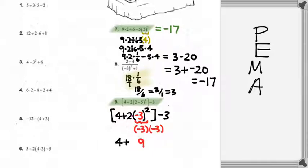So that becomes a positive 9. And then I'll put the rest of the stuff in around it. 4 plus 2 times 9. Put some brackets. Minus 3.